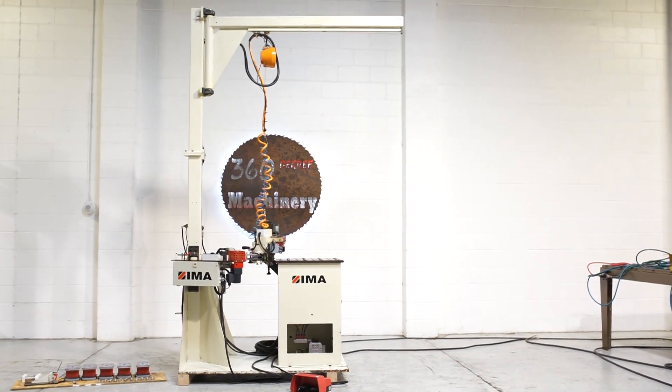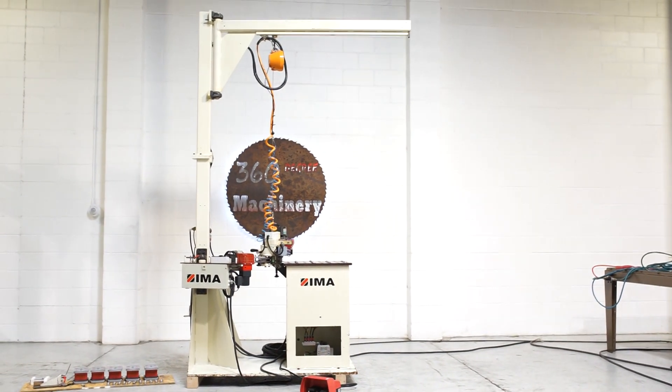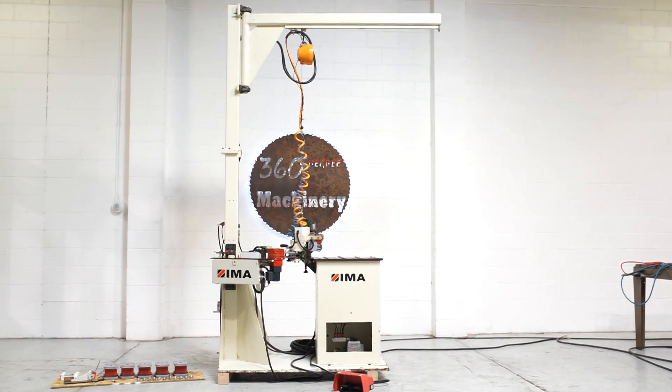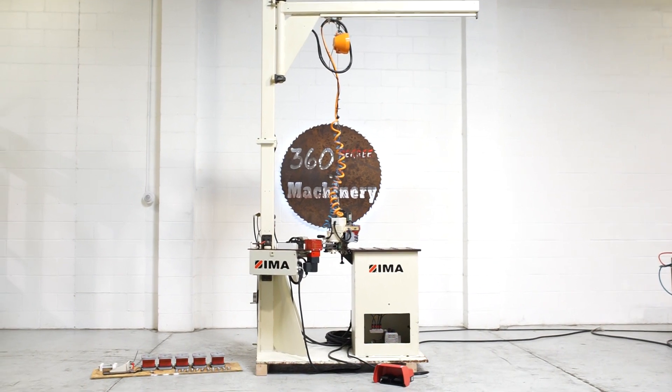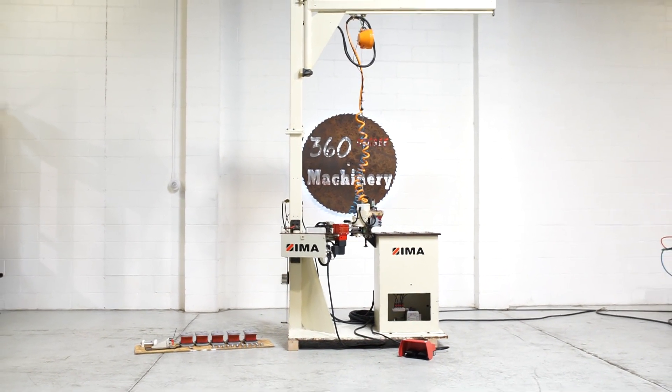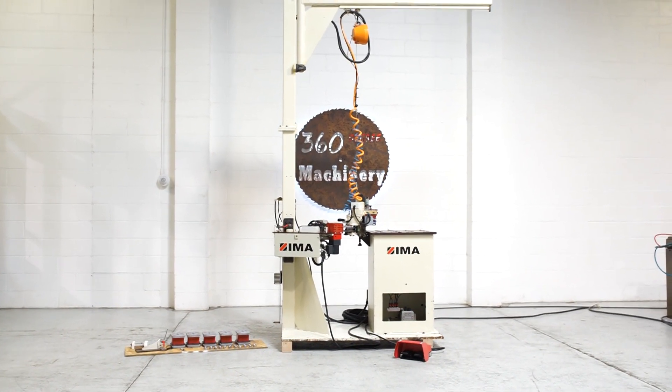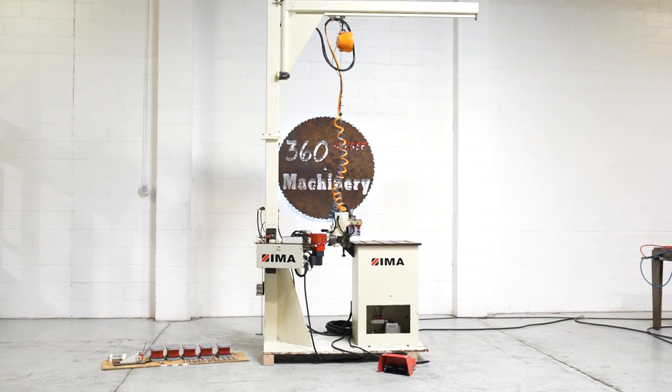Welcome to 360 Degree Machinery. We're going to do a walkthrough of an EMA HKA Contour Edge Bander. If you have questions about pricing or availability, please go to 360degreemachinery.com. Also remember that all of our machines are located right here in Naperville, Illinois, and that we do not broker tools to ensure quality.